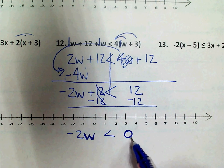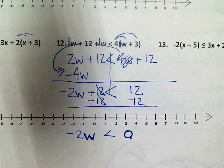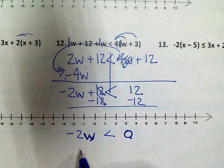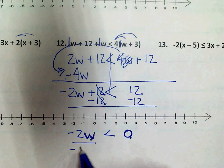So 0 is just a number, and we'll treat it like a number. Remember, here's my W. It's being multiplied by negative 2. So to get rid of the negative 2, I'll divide.